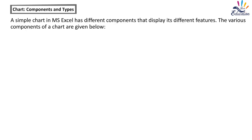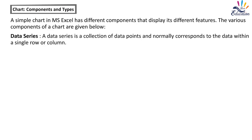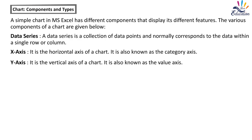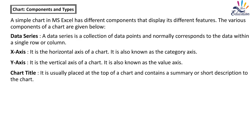Components of a chart: A simple chart in MS Excel has different components that display its various features. A data series is a collection of data points and normally corresponds to the data within a single row or column. The x-axis is the horizontal axis, also known as the category axis. The y-axis is the vertical axis, also known as the value axis. The chart title is usually placed at the top of a chart and contains a summary or short description of the chart.